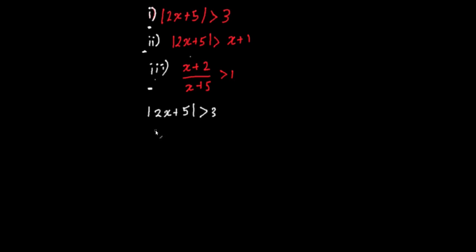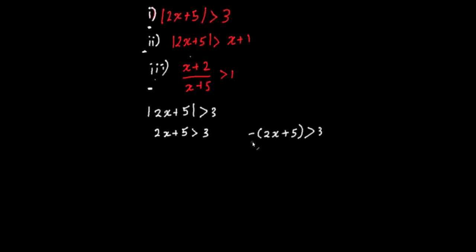If you know that 2x plus 5 is positive, you can say that 2x plus 5 is greater than 3 — easy. But if you know that it's negative, what the absolute value sign is going to do is take the negative of the negative number. So if it is negative, it's going to give us negative of 2x plus 5 is greater than 3, because we're treating 2x plus 5 as the negative number.